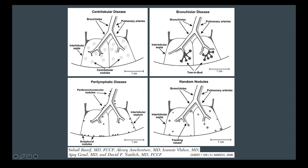When you're looking at an actual case for the first time and you see a lot of nodules, the first thing you want to do is determine if there are many nodules that are touching the interlobular septa, the fissures, or the peribronchovascular structures. And if they are, then you're looking at perilymphatic disease.